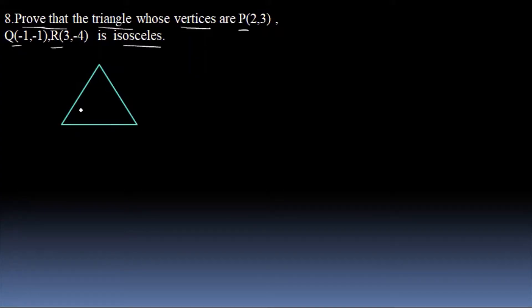This is the distance formula. The distance formula is the square root of (x2 minus x1) the whole square plus (y2 minus y1) the whole square.